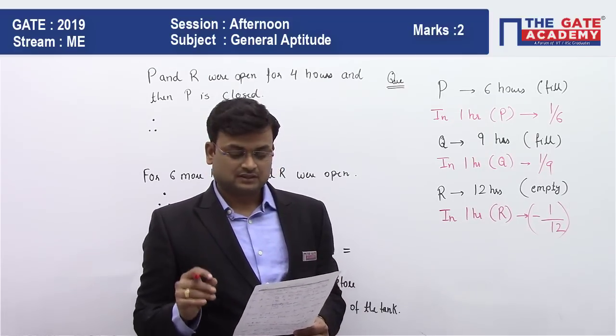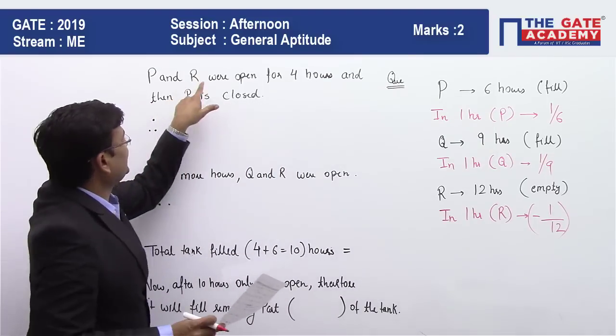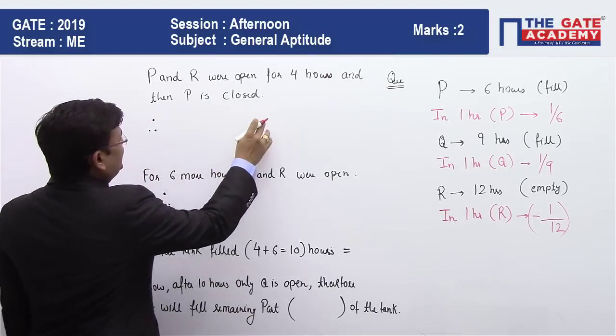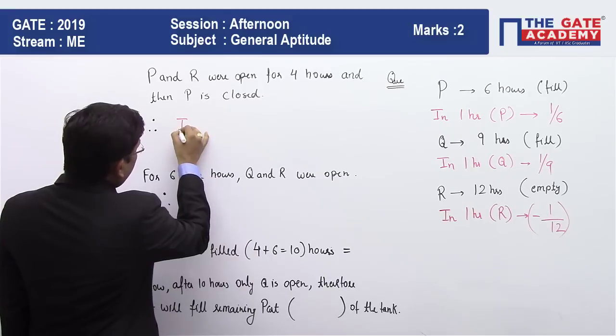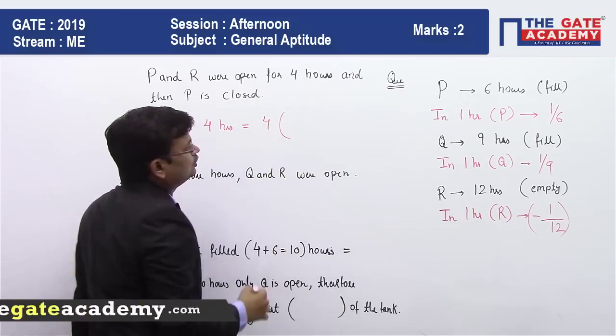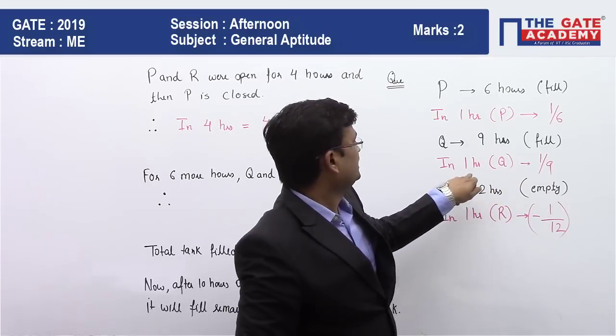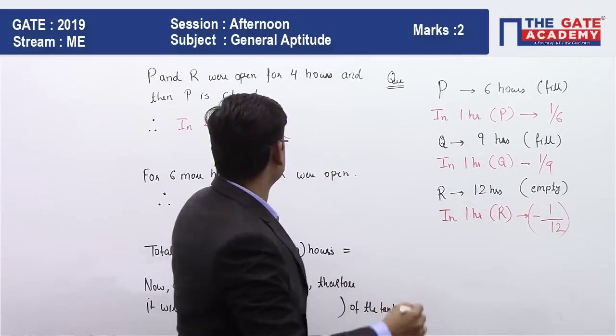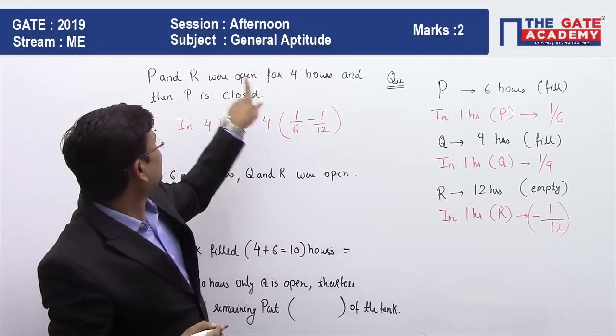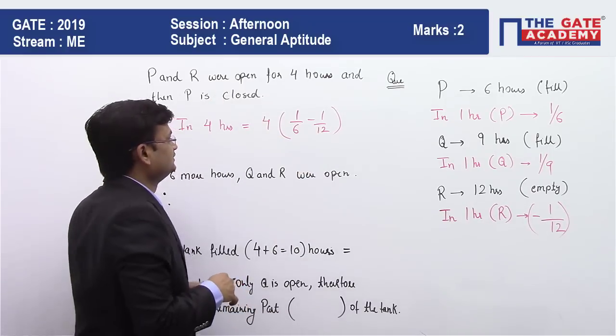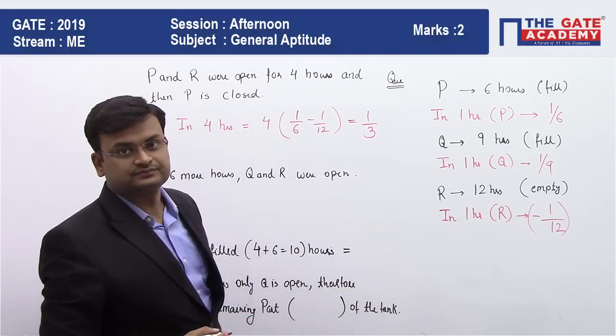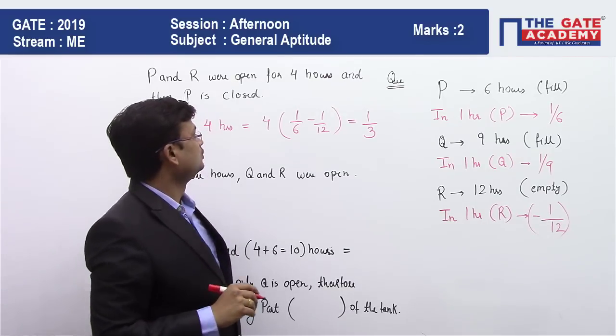Now let's read the question further. Initially P and R are open for four hours, so P and R were open for four hours and then P is closed. Now here we can find out in four hours what is the total tank filled. So in four hours, total tank filled will be four into, in one hour it is one by six, and for R it is minus one by twelve. So this is one by six and minus one by twelve. The reason it is minus is because R is emptying, that's why it has a minus sign. So it will come as one by three.